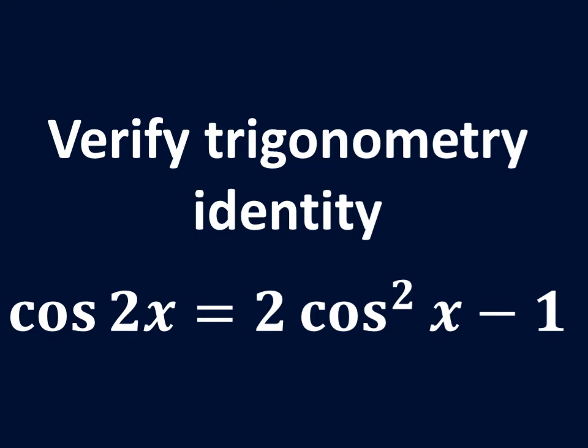In this video, we will learn to verify the trigonometry identity cos 2x equals 2 cos squared x minus 1.